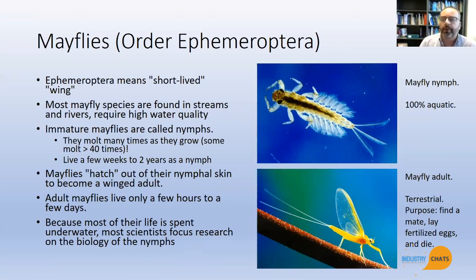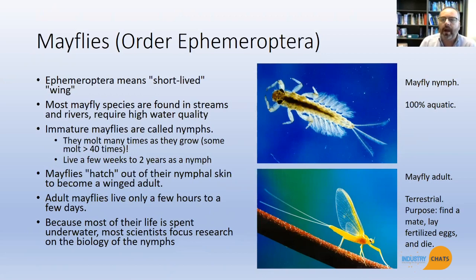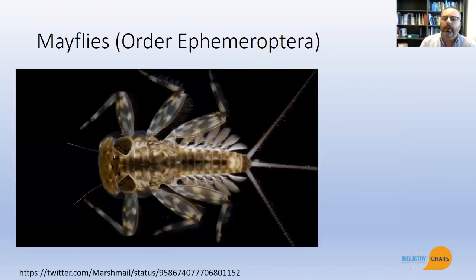Mayflies hatch out of their nymphal skin and become winged adults, spending virtually most of their lives underwater as nymphs, growing until they finally mature and emerge as adult insects. Once they emerge, their purpose in life is simply to find a mate, lay fertilized eggs, and die — and the life cycle continues. 'Short-lived wing' relates to the fact that they don't live very long out of the water.